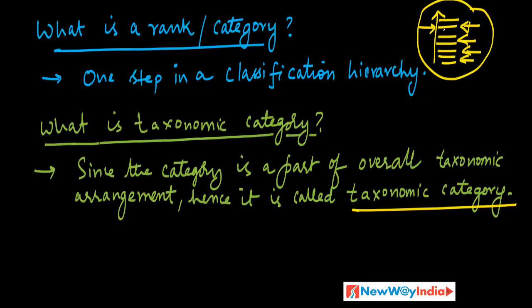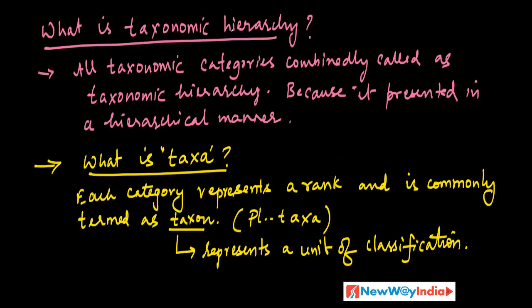A category is one part — technically called a taxonomic category. The entire collection is the taxonomic hierarchy. One is one taxonomic category, and the second, third, fourth, fifth — these are all combinedly called taxonomic hierarchy.